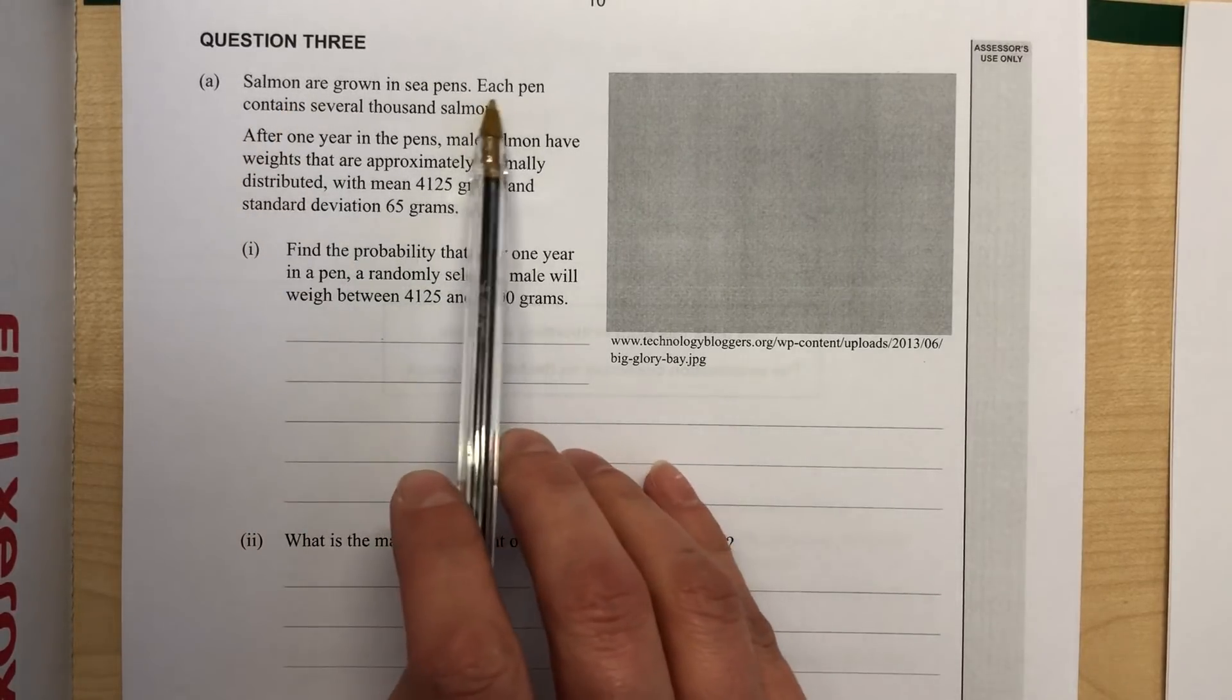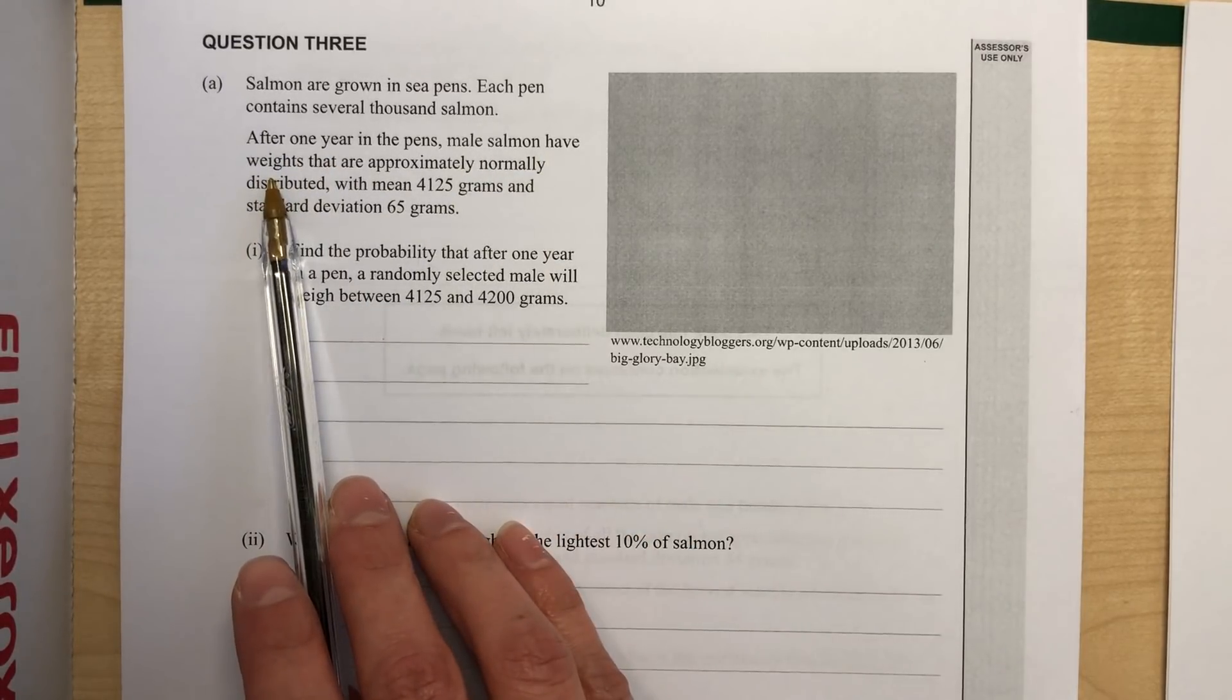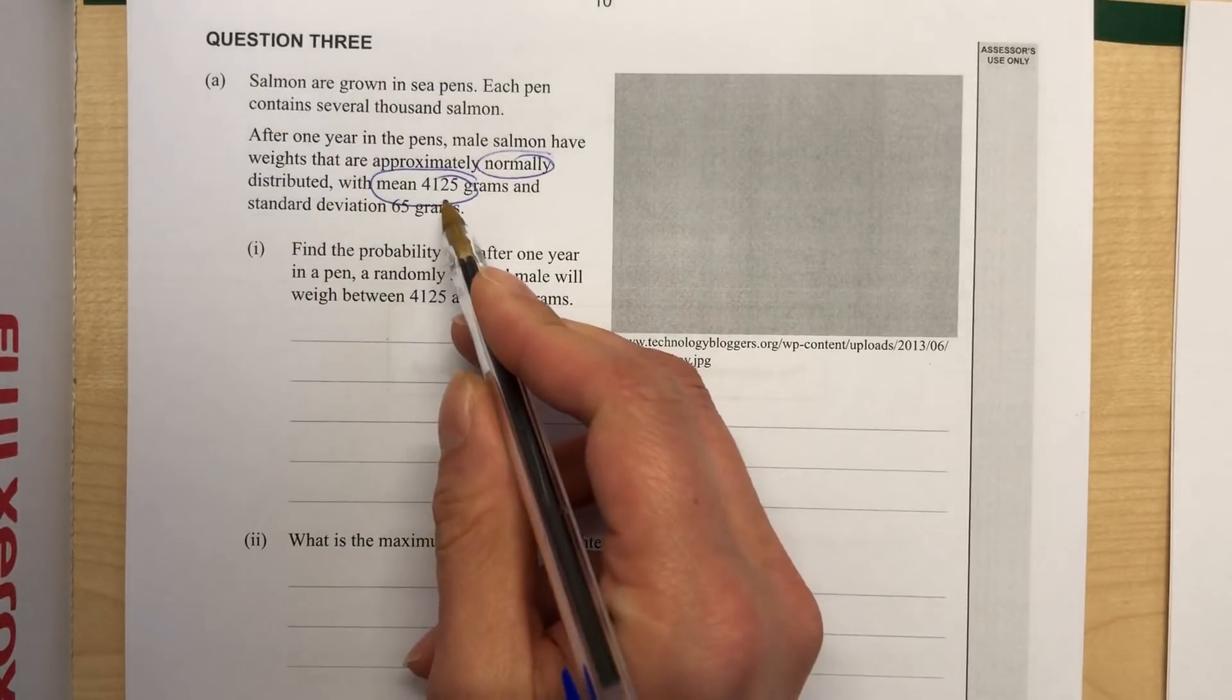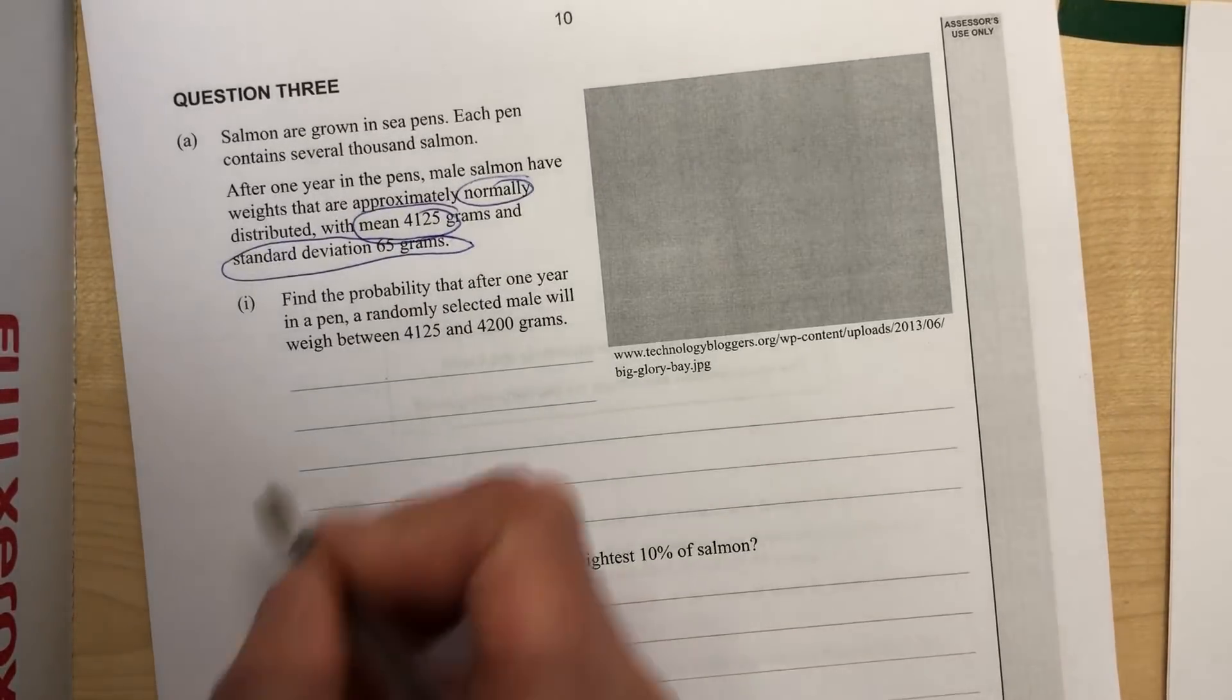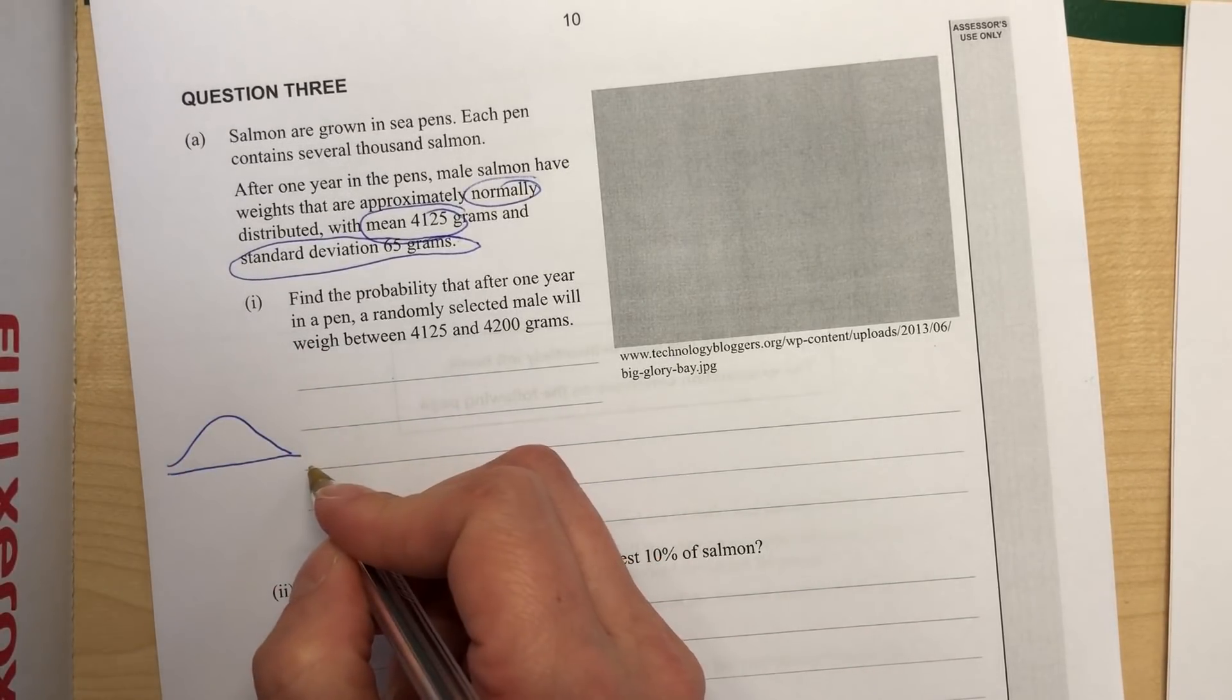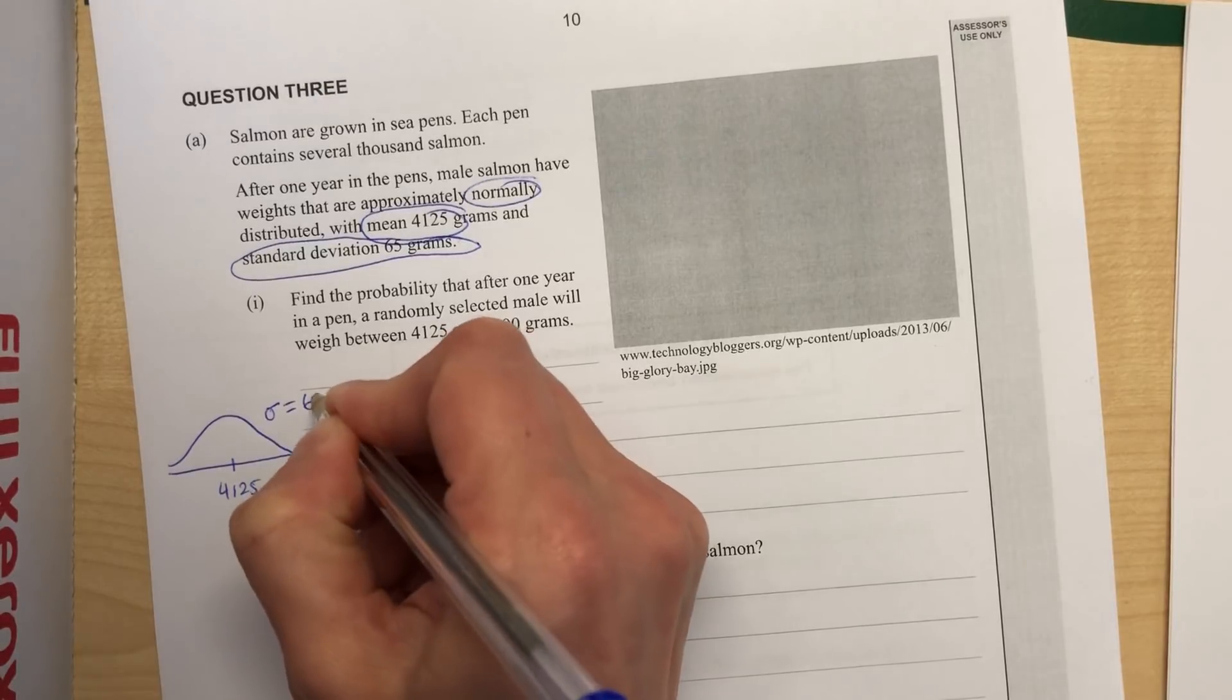So salmon are grown in sea pens, each pen contains several thousand salmon. After one year in the pens, male salmon have shown weights that are approximately normally distributed with a mean of 4125 and a standard deviation of 65. So my first thing is to draw a little sketch with that bit of information. So it's normal distribution, we've got the curve like that. The mean is 4125 and the standard deviation is 65.